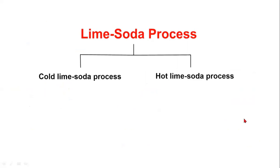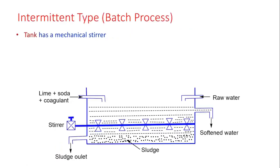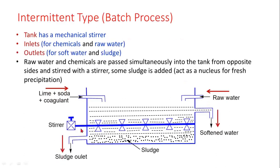The lime soda process has two categories: the cold lime soda process and the hot lime soda process. The cold lime soda process uses the batch intermittent or continuous method. The hot lime soda uses the continuous method. In the cold process, there is a mechanical stirrer that rotates. Lime, soda, and coagulants are added on one side, raw water enters from the other side, the sludge settles below, and soft water exits.